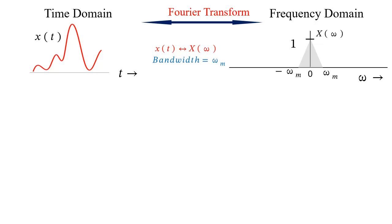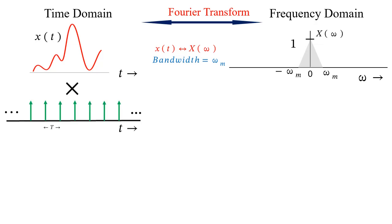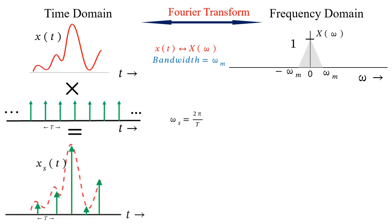To sample the signal x(t) at a rate of fs Hz or omega_s radians per second, it is multiplied by an impulse train, which is a periodic function with periodicity T seconds, where T = 1/fs, equivalent to omega_s = 2π/T. Initially all the impulses in the train have the same strength, but multiplying them with signal x(t) modifies the strength of the impulses. The strength of the impulse located at any time instant is the value of the signal at that time instant.